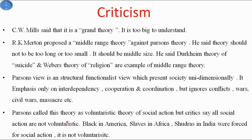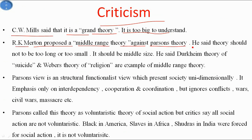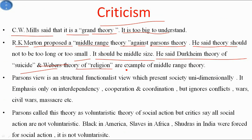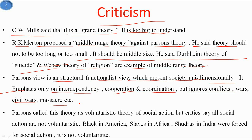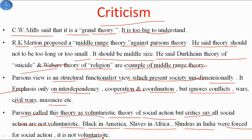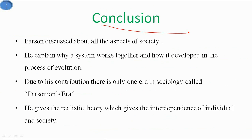Criticisms of this theory: C.W. Mills said it is a grand theory — too big to understand. R.K. Merton proposed a middle-range theory against Parsons, arguing theory should not be too long or too small, citing Durkheim's theory of suicide and Weber's theory of religion as examples. Parsons' structural-functional view presents society unidimensionally, emphasizing only interdependency, cooperation, and coordination while ignoring conflicts, civil wars, and massacres. Critics also say Parsons called this a voluntaristic theory of social action, but not all social actions are voluntary — for example, slaves in America were forced into social action.